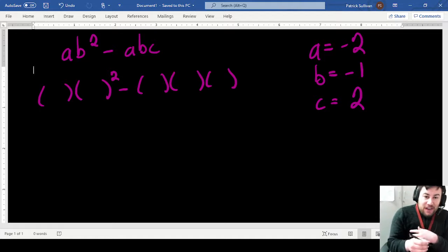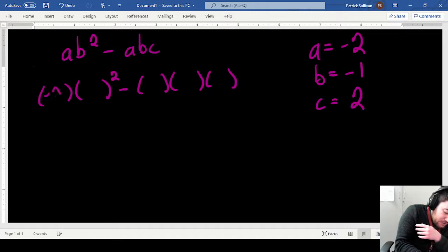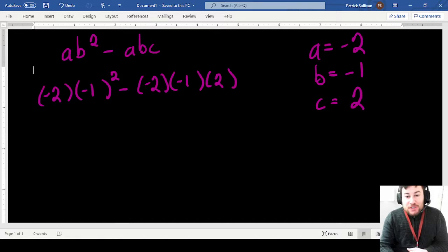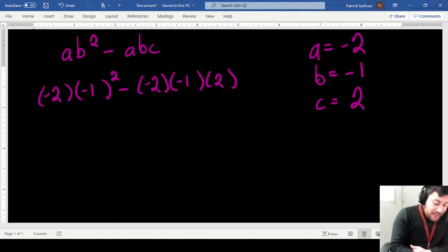So in place of a I have negative 2, and in place of b I have negative 1, and then here I have negative 2, b is negative 1, and c is positive 2. So the first thing to take care of is exponents, looking to see if there's any exponents, and indeed we do. We have the negative 1 squared.